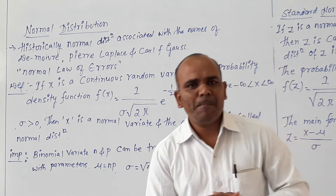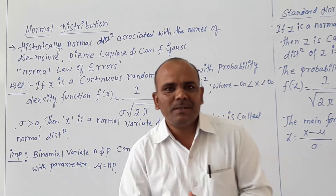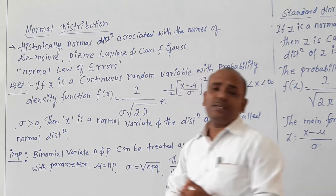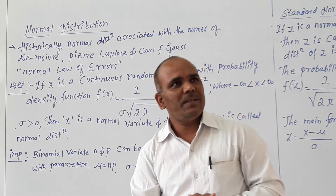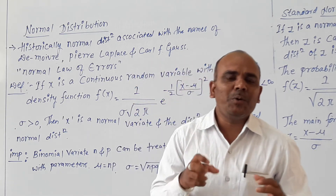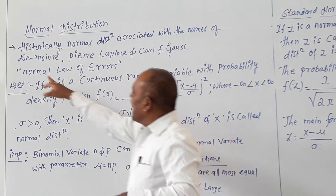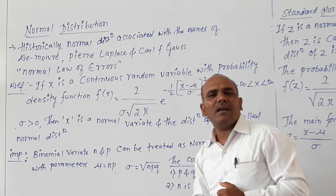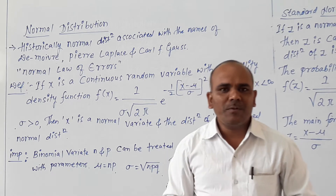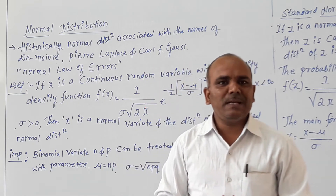We will move on to the introduction of Normal distribution and who coined or derived this concept. Historically, Normal distribution is associated with the names of persons who contributed to the development of this concept. The first contributors are D.O.V. Perdila and Carl F. Gauss. The major contribution was done by Carl F. Gauss.